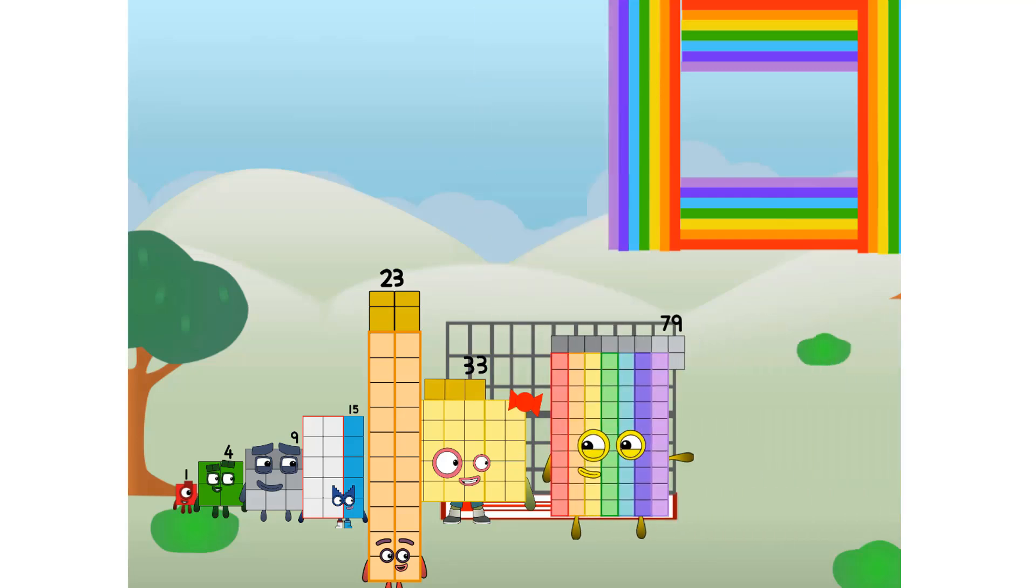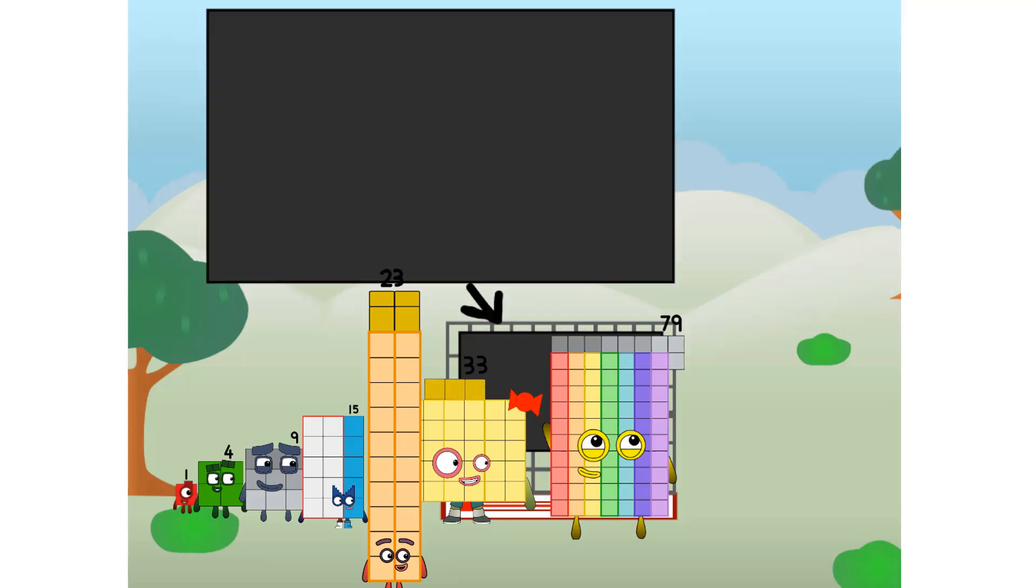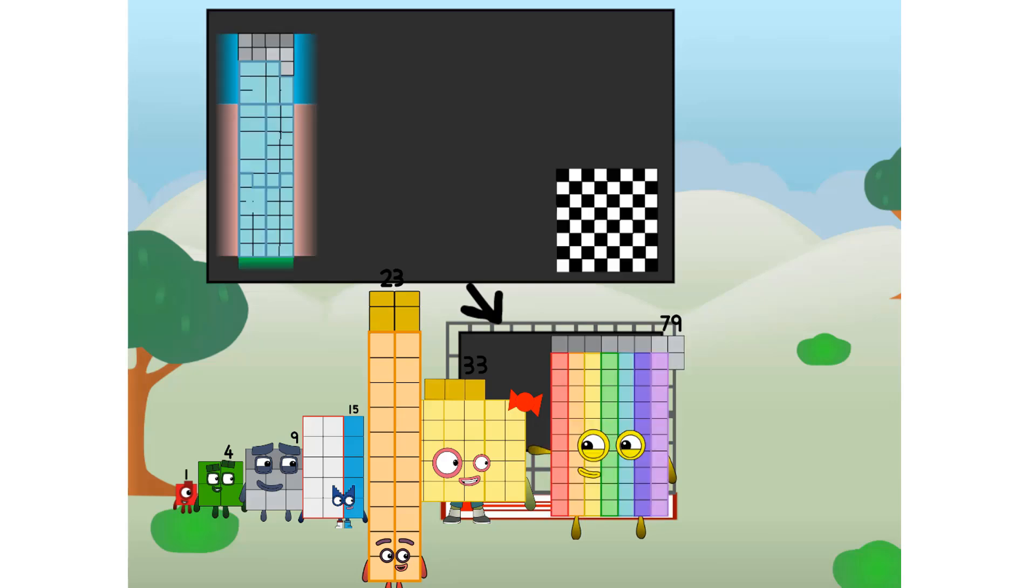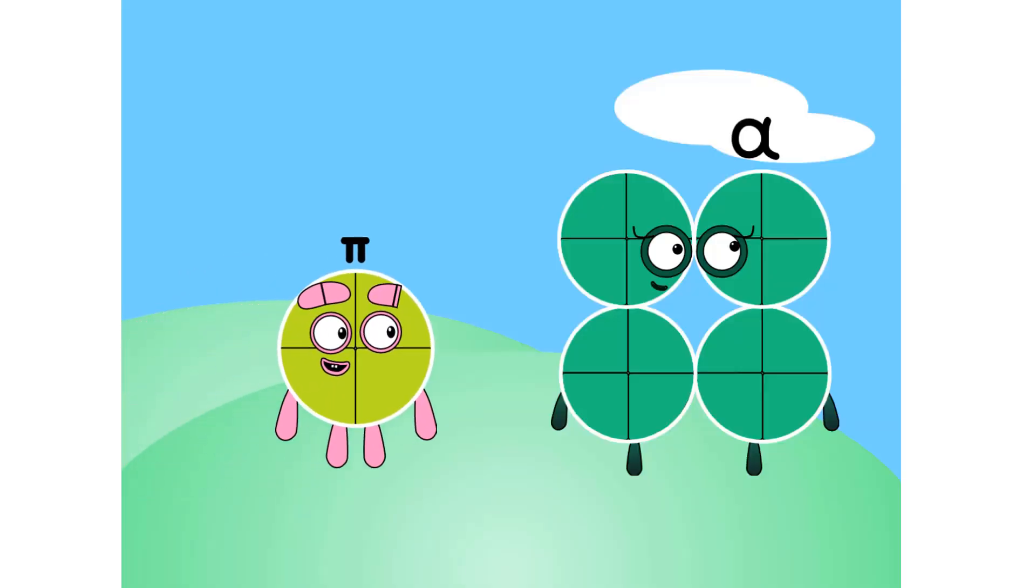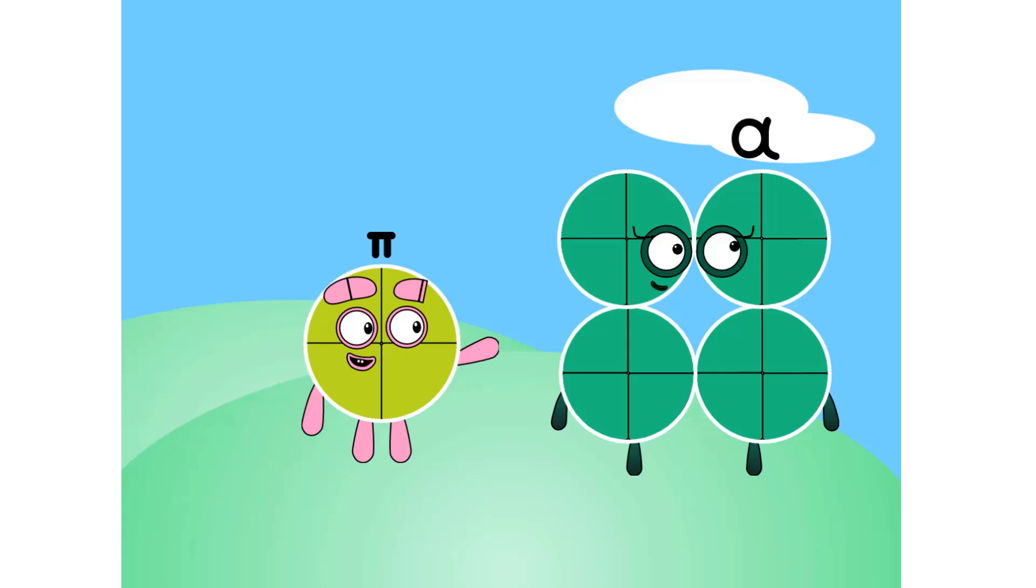There you are, this way. I've got so much to show you. I am 79, and I can be a strong prime, a chessboard, a 235s, and three nines, or even a super rectangle. But today, I want to show you a little trick I... Hello, Alpha. How are you? Pie, look at what they did to you. They made you pink.